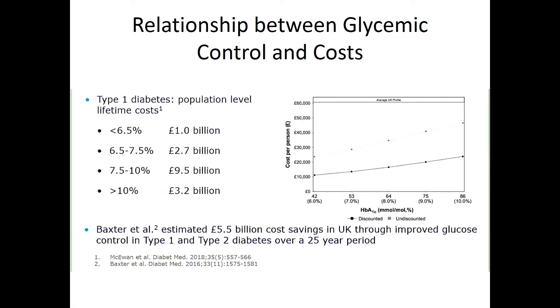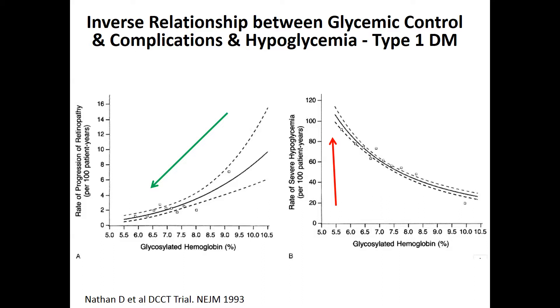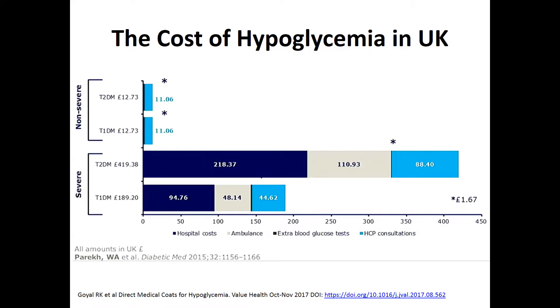Lower A1Cs are associated with lower healthcare costs — better A1Cs mean better economic outcomes for type 1 diabetes. Classic data shows that lower A1C is good not only for costs but for decreased progression of complications. However, there's a corollary: lower A1C is also associated with a much higher rate of severe hypoglycemia. Severe hypoglycemia is not a good thing — besides the patient being sick and requiring immediate care, it's much more costly than non-severe hypoglycemia.